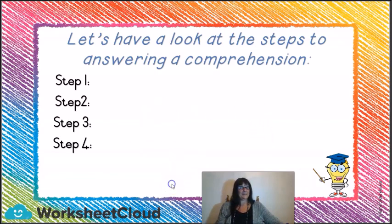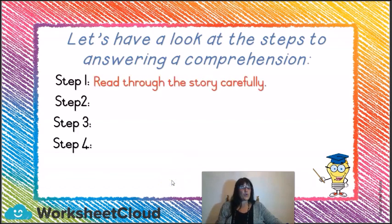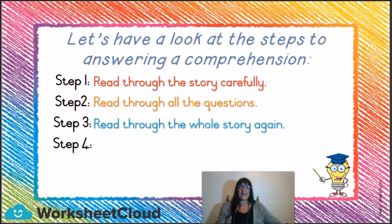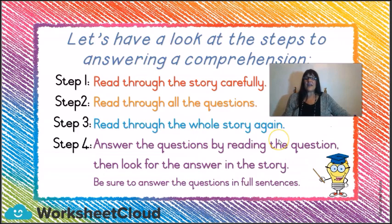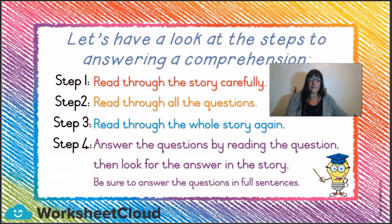Step number one: read through the story carefully. Step number two: read through all the questions. Step number three: read through the whole story again. And step number four: answer the questions by reading the question and then look for the answer in the story. Be sure to answer the questions in full sentences. A full sentence starts with a capital letter, you write the answer, and then you have a full stop at the end. That's what a full sentence means.